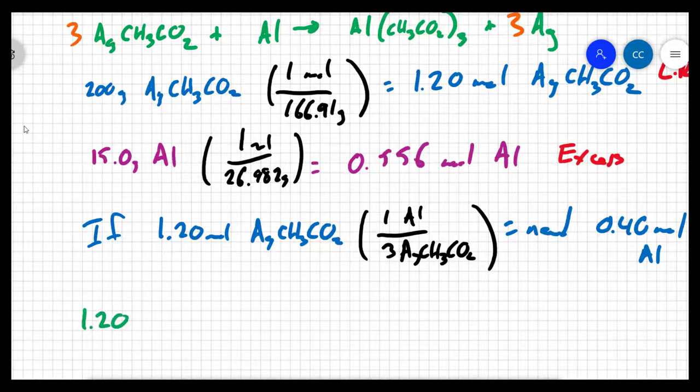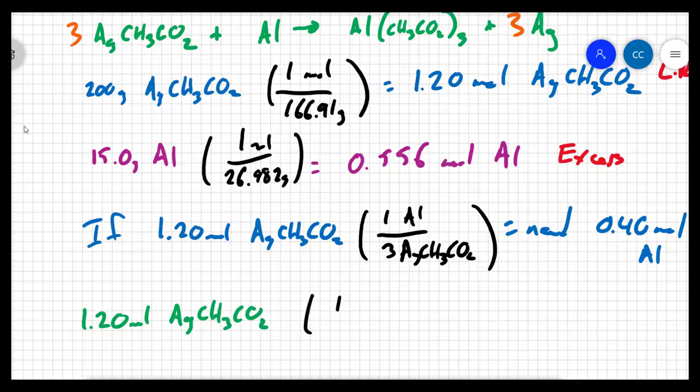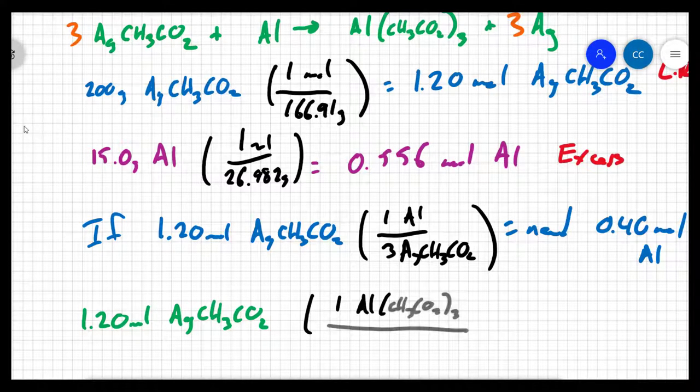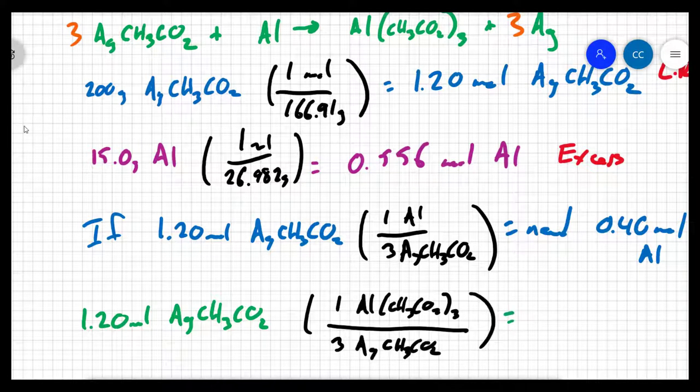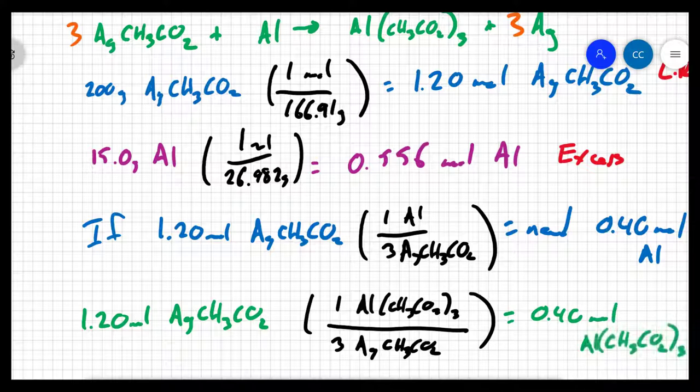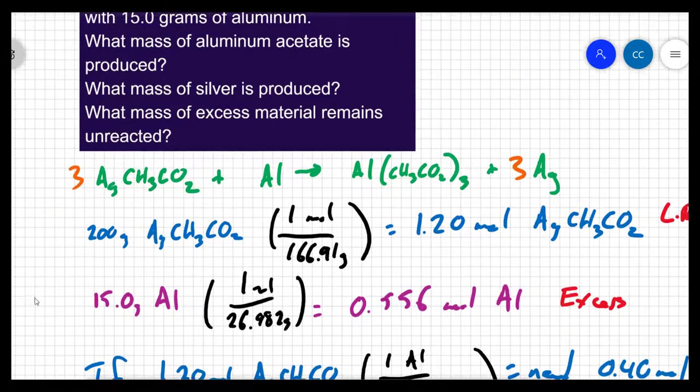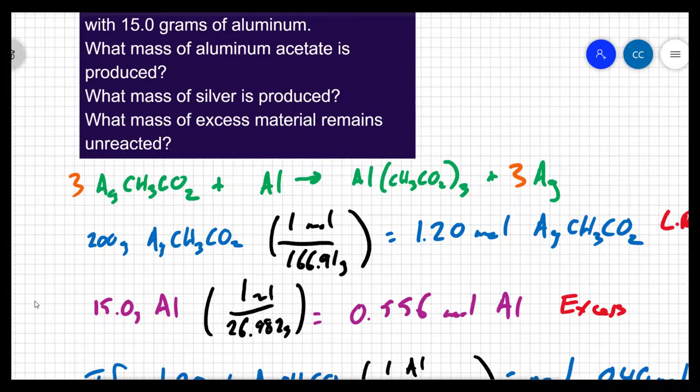I'm going to say 1.20 moles of silver acetate. And then from my balanced equation, there is one aluminum acetate for every three silver acetates, which means I'm going to make 0.40 moles of aluminum acetate. Now the question wasn't asking for the moles of the product.